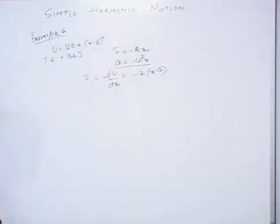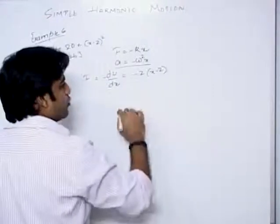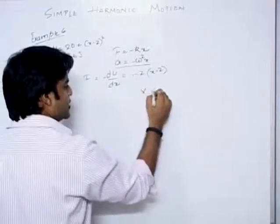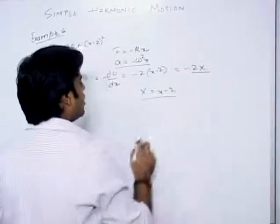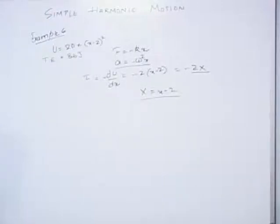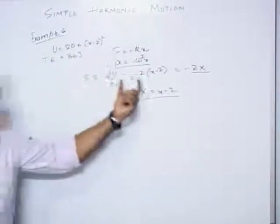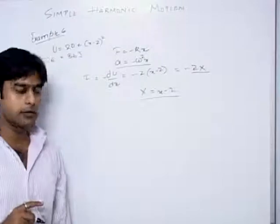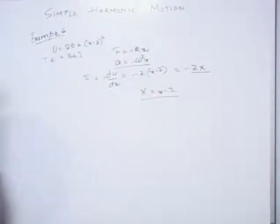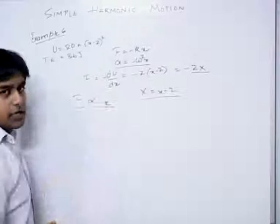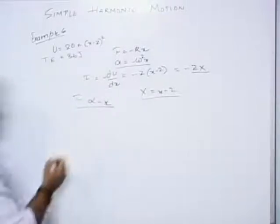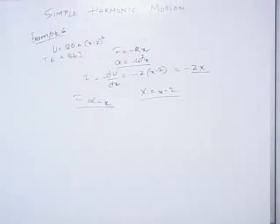So F equals minus 2 into (x minus 2). If we write X' equal to (x minus 2), we can replace it. Then F equals minus 2X', which verifies the equation of SHM — force is directly proportional to displacement and in the opposite direction. So this is a Simple Harmonic Motion. First part is clear.